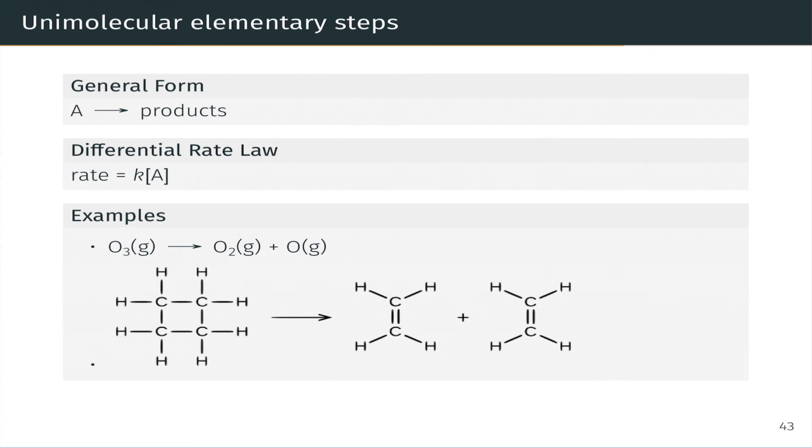And an example we actually just saw on one of the earlier slides, one molecule of O3 decomposing to form O2 and an oxygen atom. Another example that's shown here is the decomposition of cyclobutane to form two ethylene molecules. This is unimolecular because only one cyclobutane molecule is involved on the reactant side.